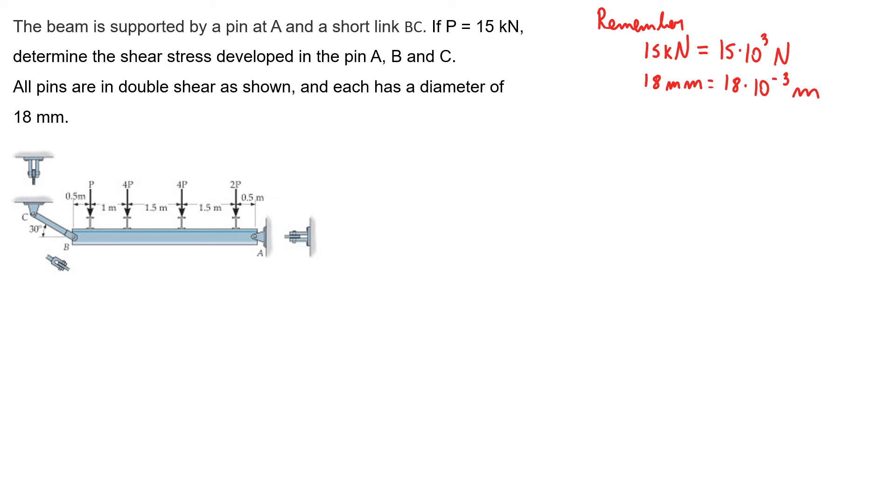Hello guys, this is the second exercise. The beam is supported by a pin at A and a short link BC. If P equals 15 kilonewtons, determine the shear stress developed in pin A, B, and C. All pins are in double shear as shown and each has a diameter of 18 millimeters.